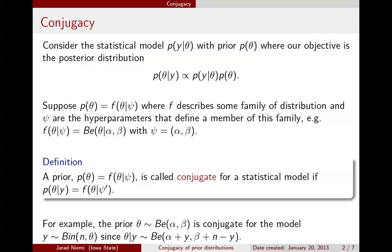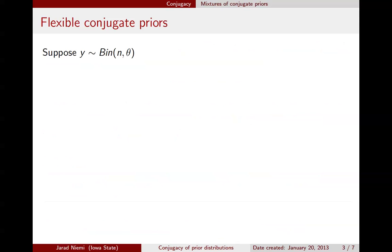Conjugacy is a restriction on the possible priors that you could use in a problem, but the rest of this mini-lecture is going to show that it's not very restrictive. In particular, we're going to talk about mixtures of distributions. Continuing with the binomial distribution example, where we already knew that a beta distribution was a conjugate prior, now we're going to use a mixture of two beta distributions.